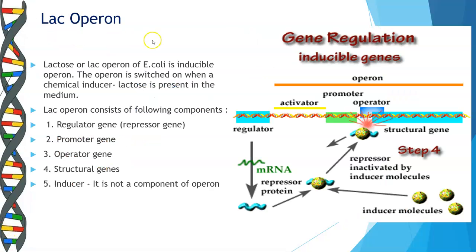The lactose operon or the lac operon of E. coli is an inducible operon. The operon is switched on when a chemical inducer, lactose, is present in the medium. Inducible means you require a small substance which will induce or start the functioning of the operon.